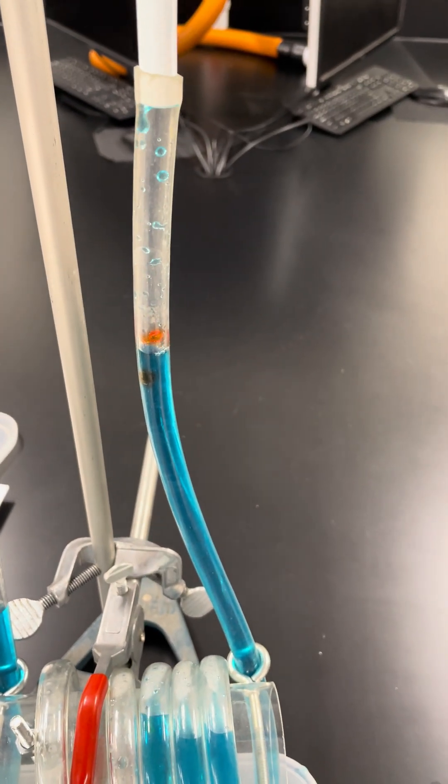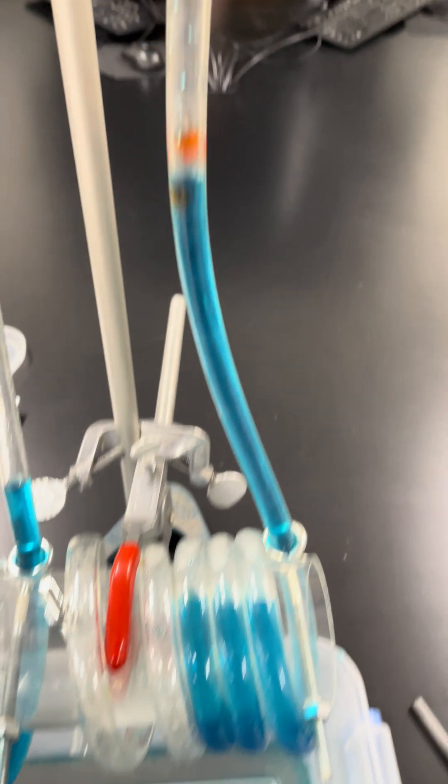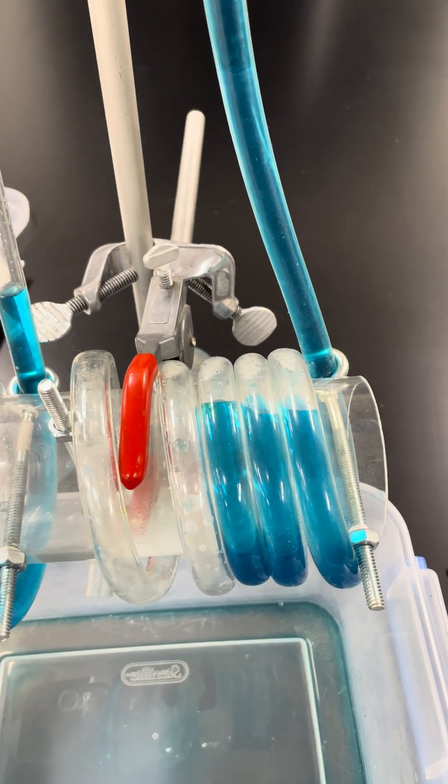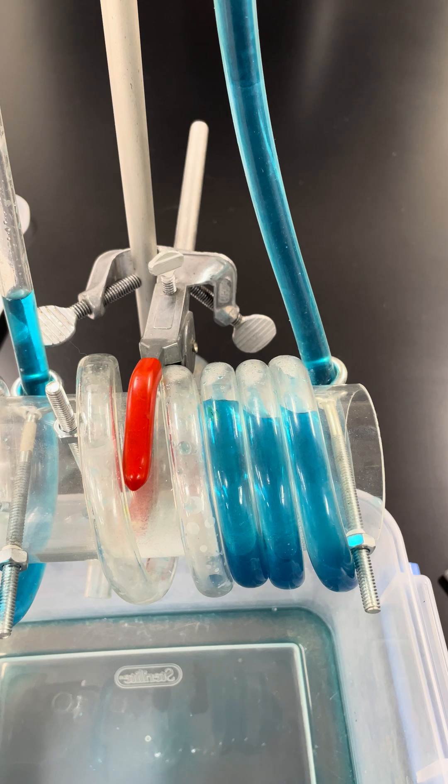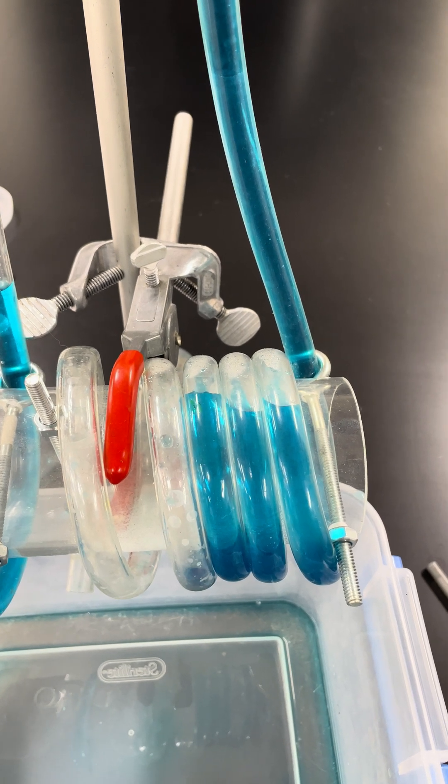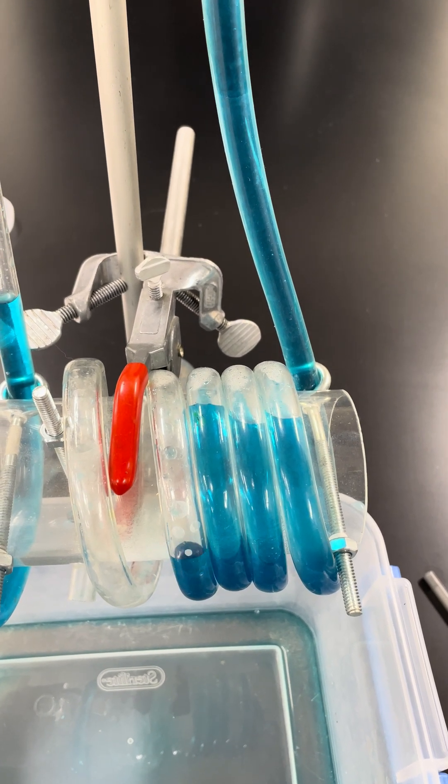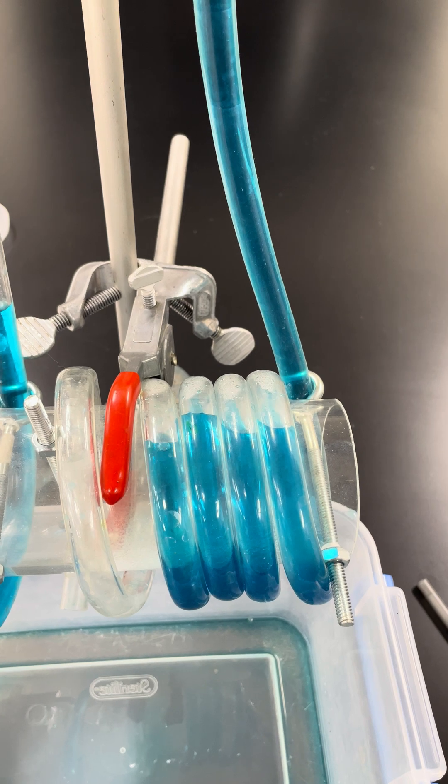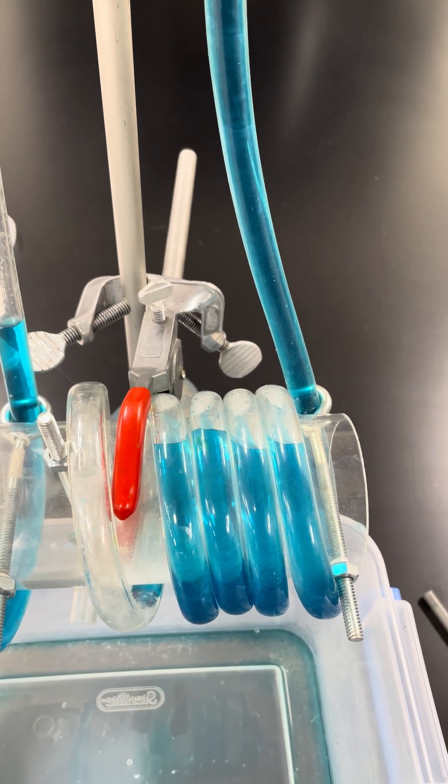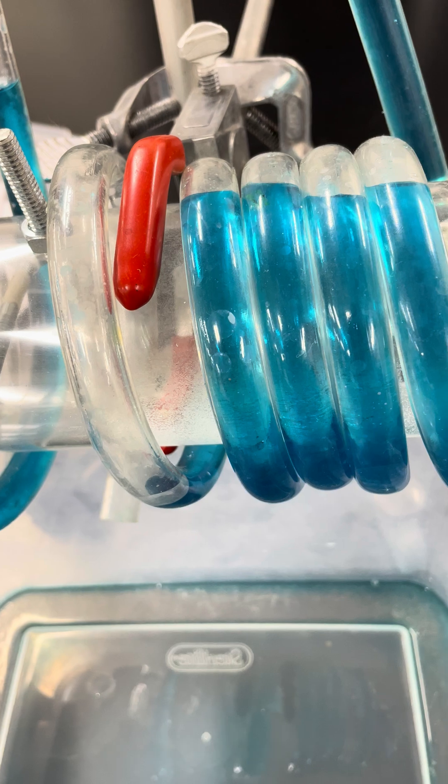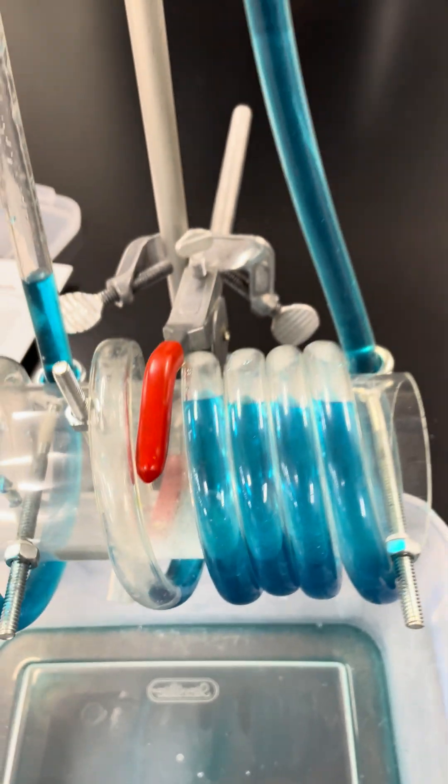And as it does that, it's going to increase the backup height in the tube. Keep doing that. Now it's running over all three of those loops. And it's going to start to fill the fourth loop. And once it runs over there, it's going to trap some air gap between the fourth and the fifth loop.